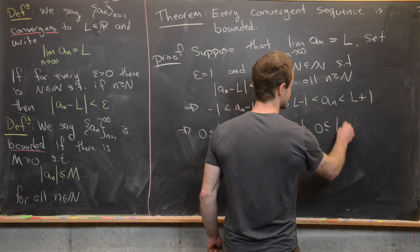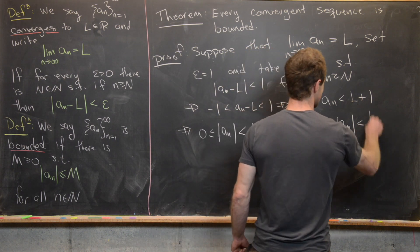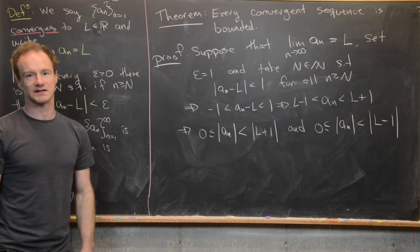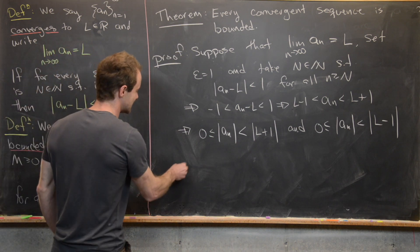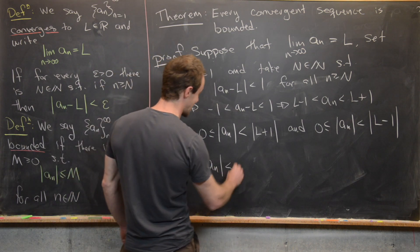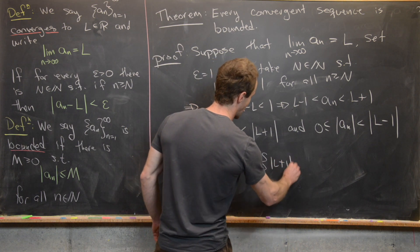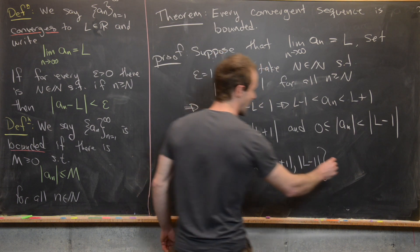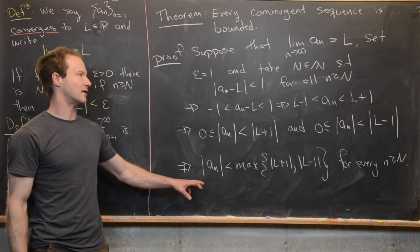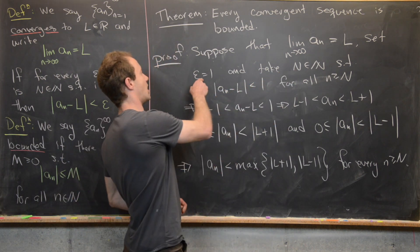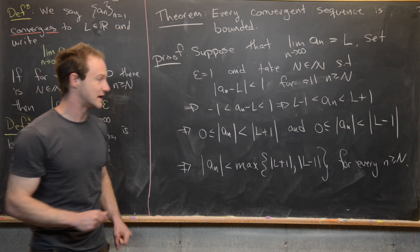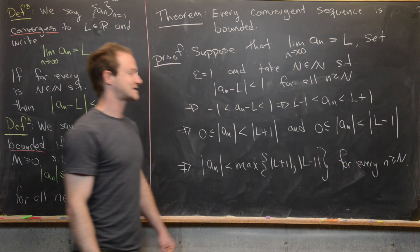We also have 0 ≤ |a_n| < |L minus 1|. Since we don't know if L is positive or negative, we handle both cases. We can combine them into one statement: |a_n| < max(|L + 1|, |L minus 1|), and that's true for every little n bigger than or equal to capital N. So our sequence is bounded after this point capital N.